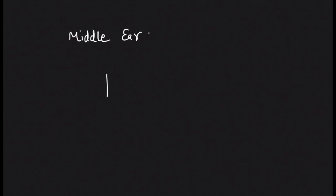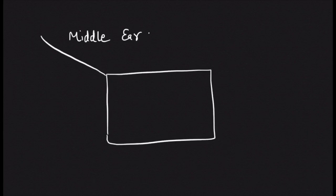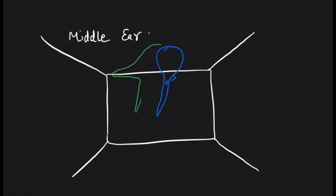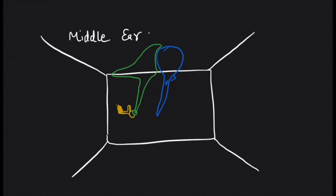Moving further ahead and examining the ossicles closely — first let's understand them in the diagram, then see how they look in reality. We are facing the medial wall; on the right is the anterior wall and on the left is the posterior wall. This is the malleus — the head, lateral process, and handle. The malleus forms a joint with the incus — the body of the incus articulates forming the malleus-incudal joint. Below the long process is the lenticular process, which articulates with the head of the stapes. The stapes has two crura — anterior and posterior, with the posterior one thicker — and then the foot plate covering the oval window. The parts of the ossicle lying in the mesotympanum are the handle of the malleus, long process of the incus, and stapes.